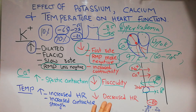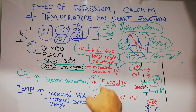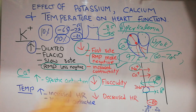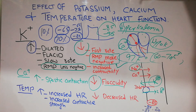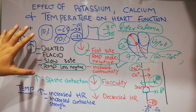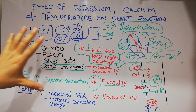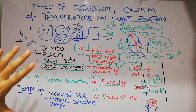If the permeability of ions is high due to high temperature, then the heart rate and contractile strength of the heart will be high. But if the temperature of the body is decreased, the permeability of the ions will decrease, the heart rate will decrease, the heart contractile strength will decrease, and even death can occur. That's all about the effects of potassium, calcium, and temperature on the heart function.